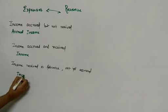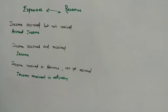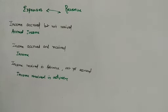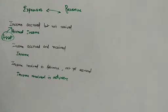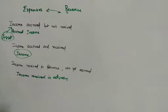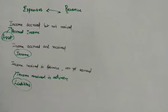The third revenue case is income received in advance but not yet earned. For example, interest income is received for 3 months in advance. That portion not yet earned is income received in advance. Since we have received cash for a benefit not yet given, we have an obligation — so income received in advance is a liability.